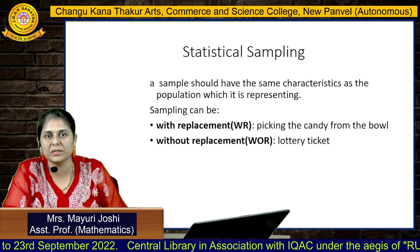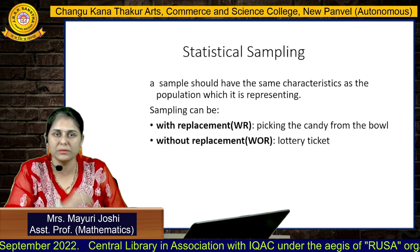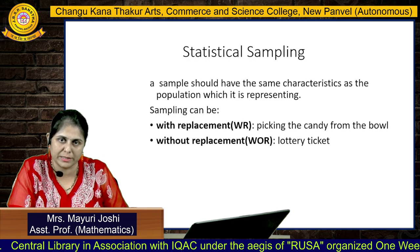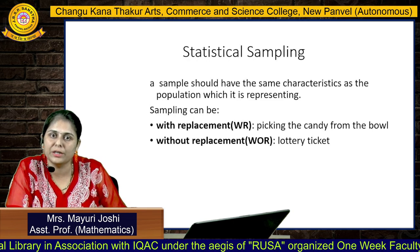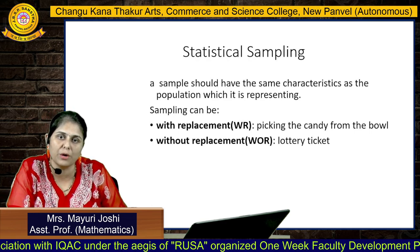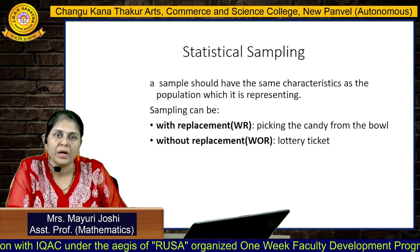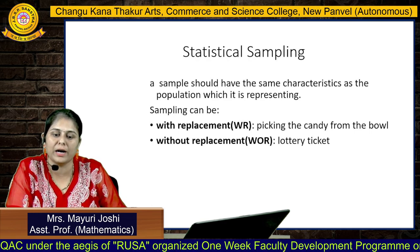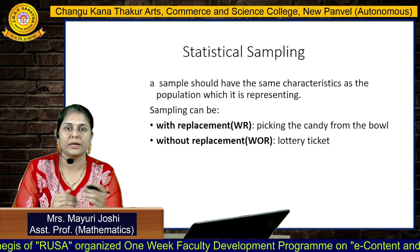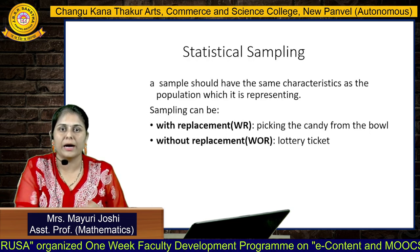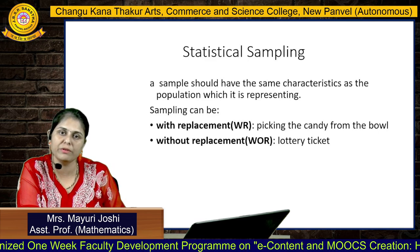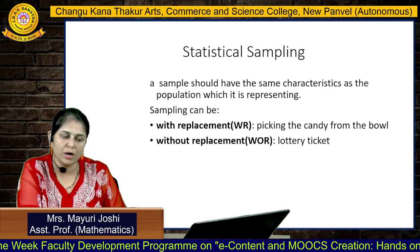The sample must have the same characteristics as the population which it represents. There are two types of sampling: one is with replacement and one is without replacement. With replacement means the sample units we are selecting are replaced back again. Without replacement means once we select the sample unit, we are not keeping it again in the population.